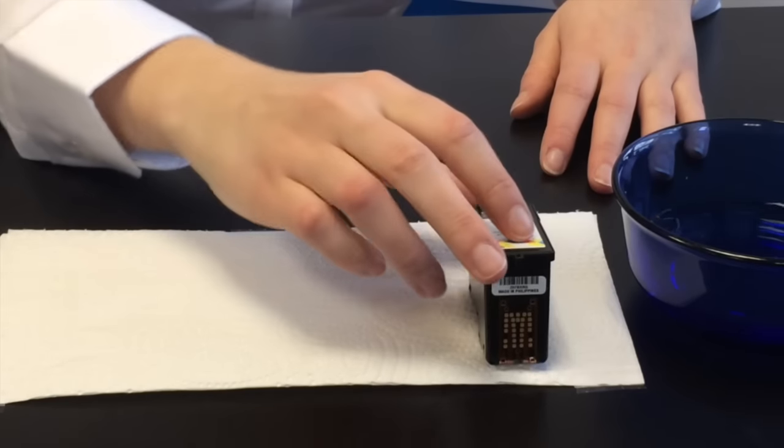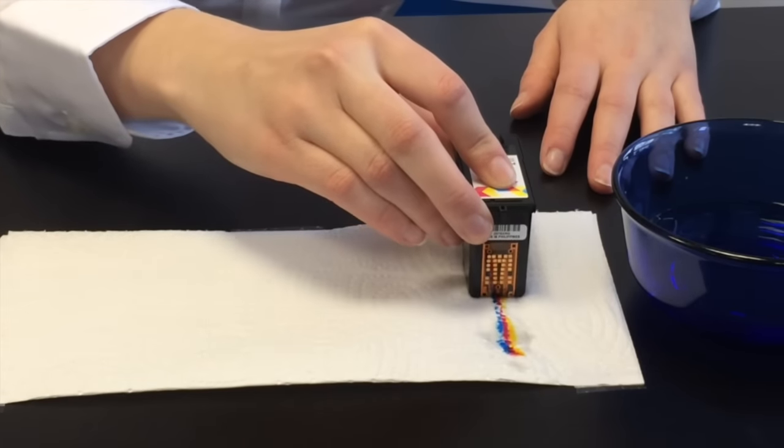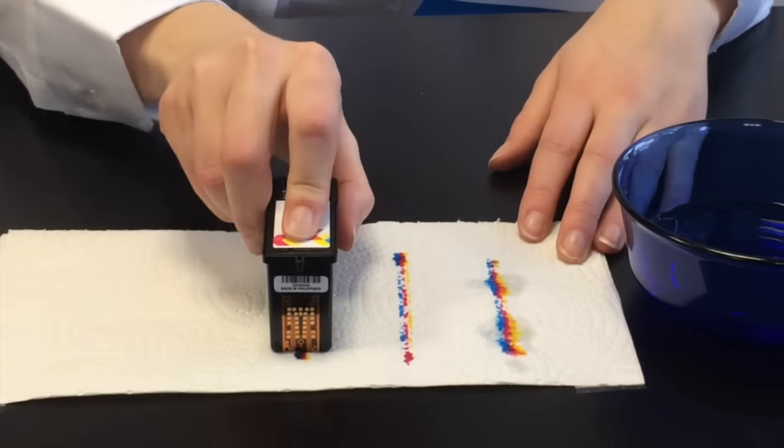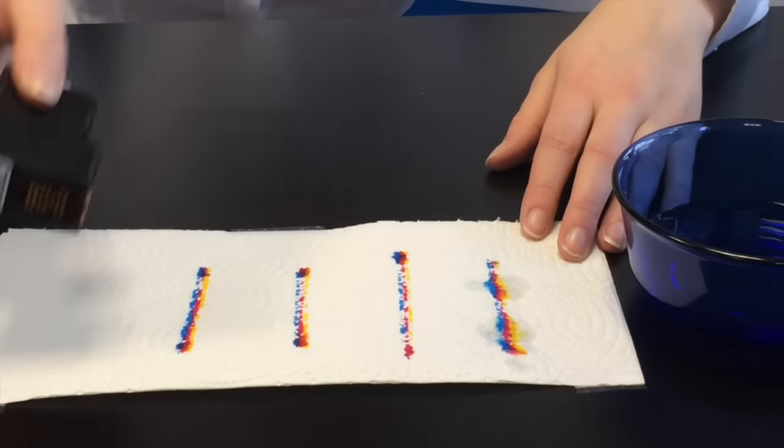Now take out the cartridge and wipe the bottom of the cartridge on the paper towel to clean off the printhead. Please repeat until all three colors are clearly visible.